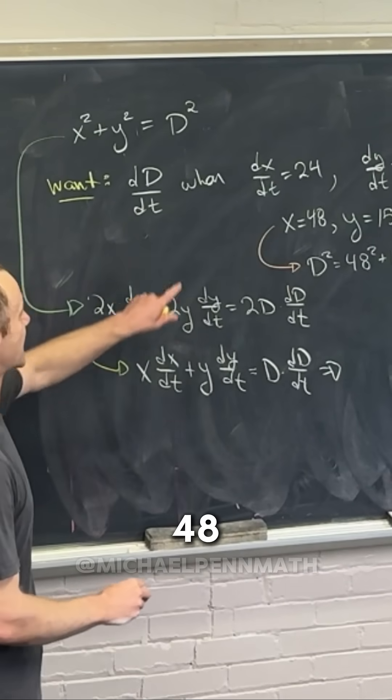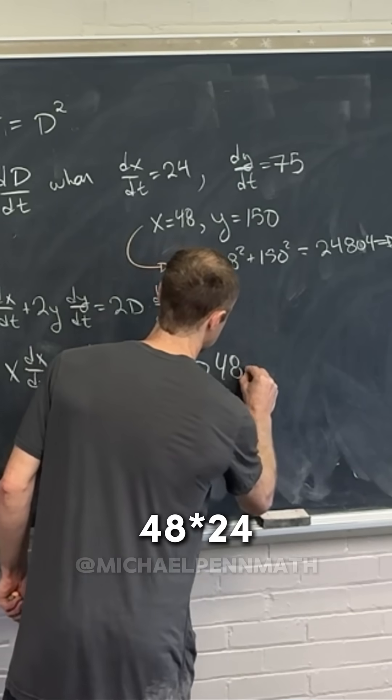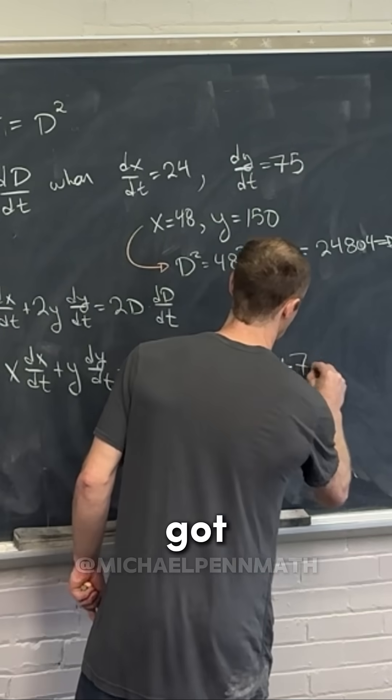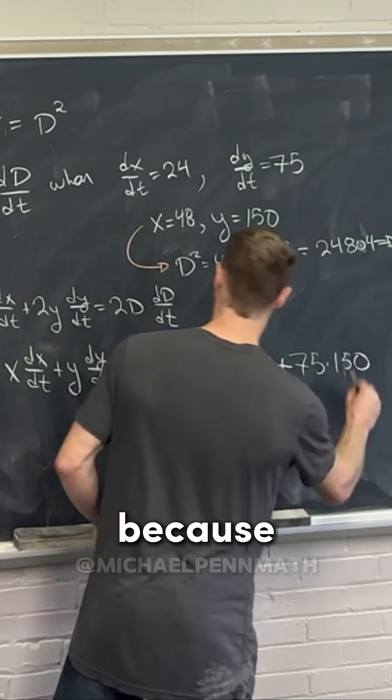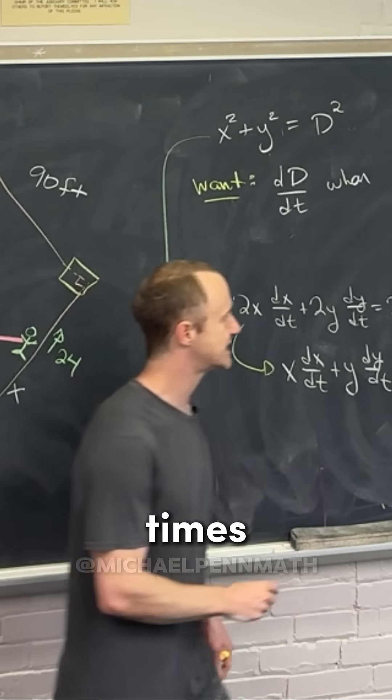x is 48 times 24, that's dx/dt, so we have 48 times 24 plus y, which was 150 times 75. We've got 75 times 150 because we have y times the derivative of y.